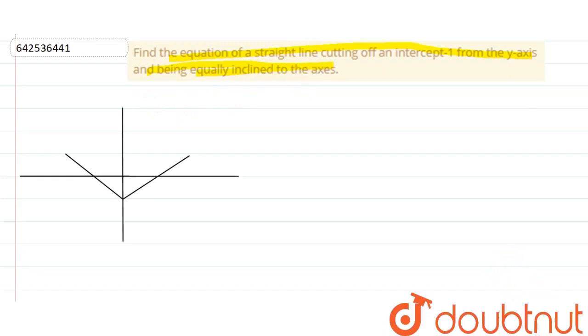So what I have done is, I have already drawn a figure here. We have y-axis and x-axis. And as the question is asking us that the straight line cutting off the intercept minus 1 from the y-axis.